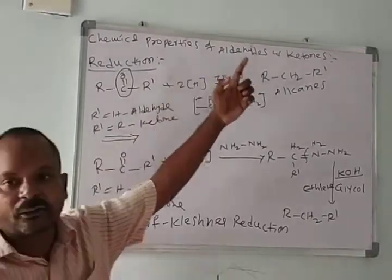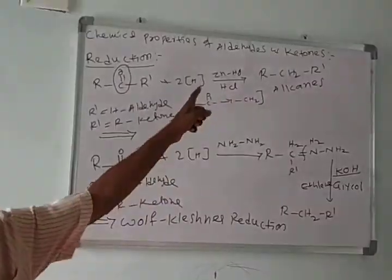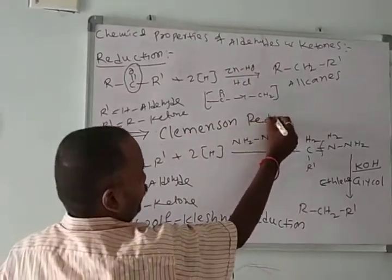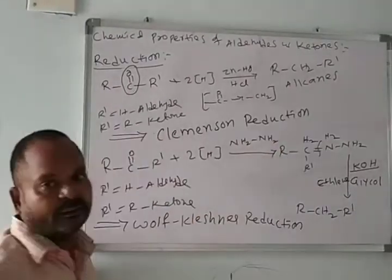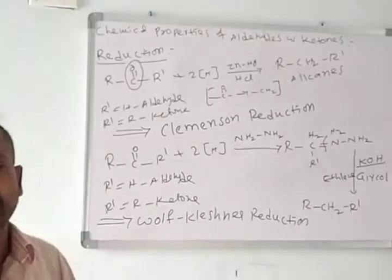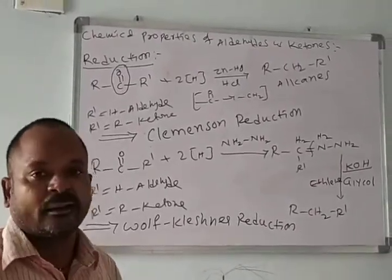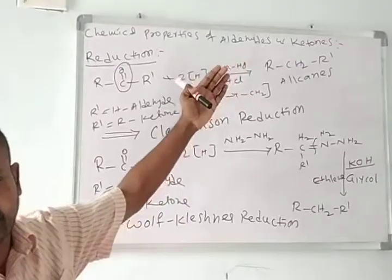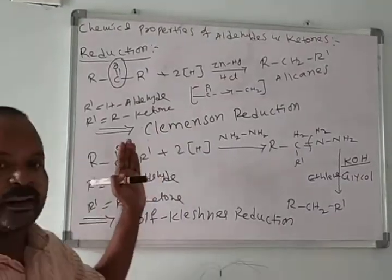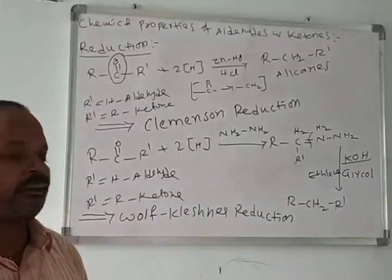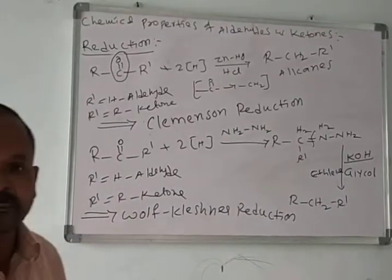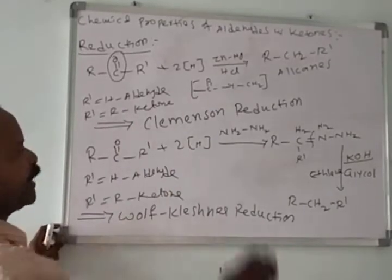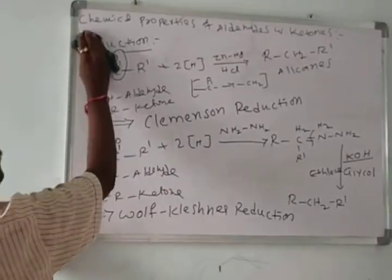To summarize: the conversion of aldehydes and ketones into alkanes in the presence of zinc amalgam and hydrochloric acid is called Clemmensen reduction. The conversion of aldehydes and ketones into alkanes in the presence of hydrazine, potassium hydroxide, and ethylene glycol is called Wolff-Kishner reduction. These are the two important named reductions.